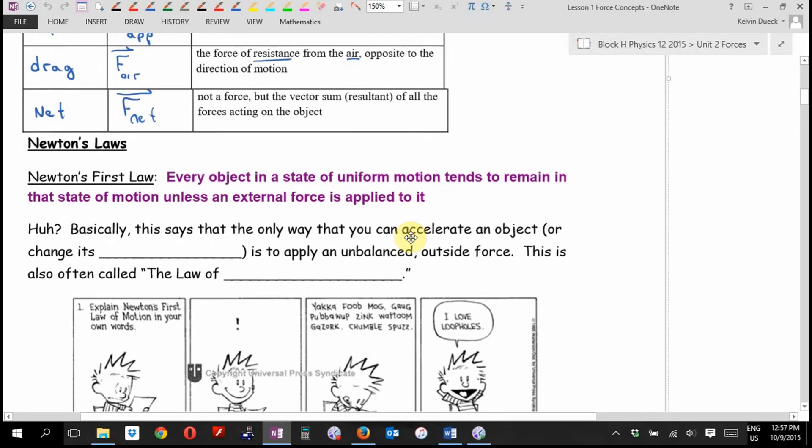Here's what it says. The only way that you can accelerate an object or change its velocity is to apply an unbalanced outside force. If an object is accelerating, there must be an unbalanced outside force. There has to be. If it's not accelerating, and remember, not accelerating can mean stopped or constant speed, then there can't be an unbalanced outside force. This is the law that's going to help us figure out when we're doing pictures if we're missing anything. This is often called the law of inertia.